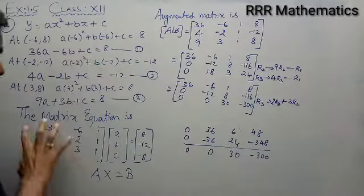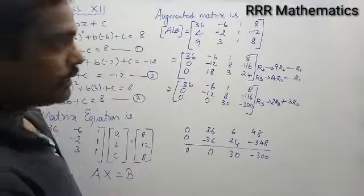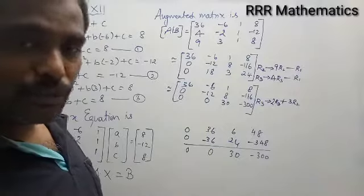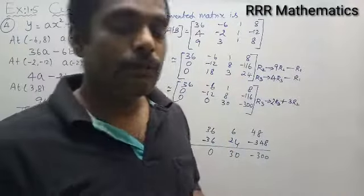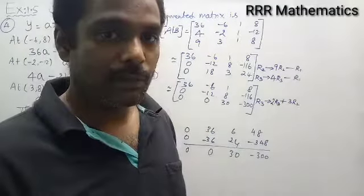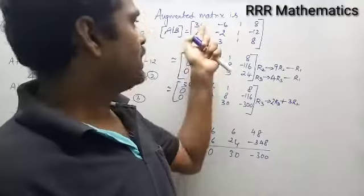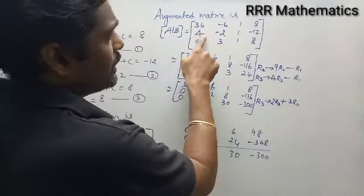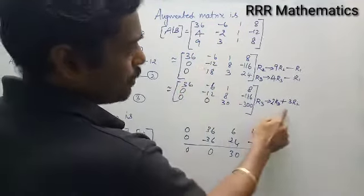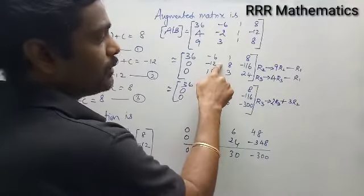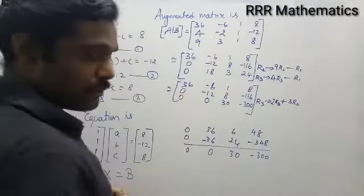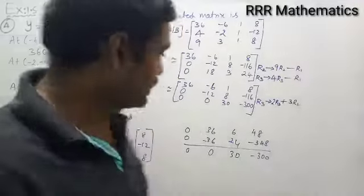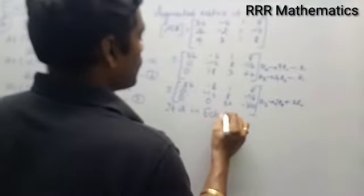So we have a triangular shape of zeros, which is the echelon form. The augmented matrix in echelon form can now be written back as AX = B. The matrix is in echelon form — no two rows are identical or proportional, so we can proceed with back substitution.